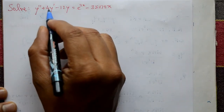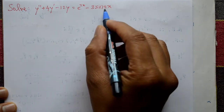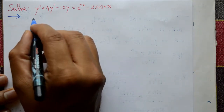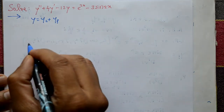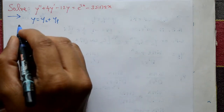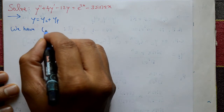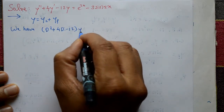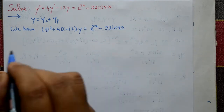Solve y'' + 4y' - 12y = e^(2x-3) · sin(2x). Find the general solution. The general solution is y equals complementary function plus particular integral. We can write this equation as (D² + 4D - 12)y = e^(2x-3) · sin(2x).